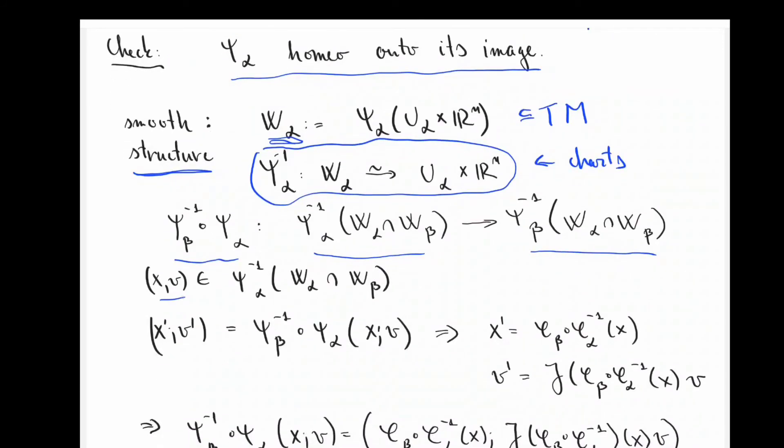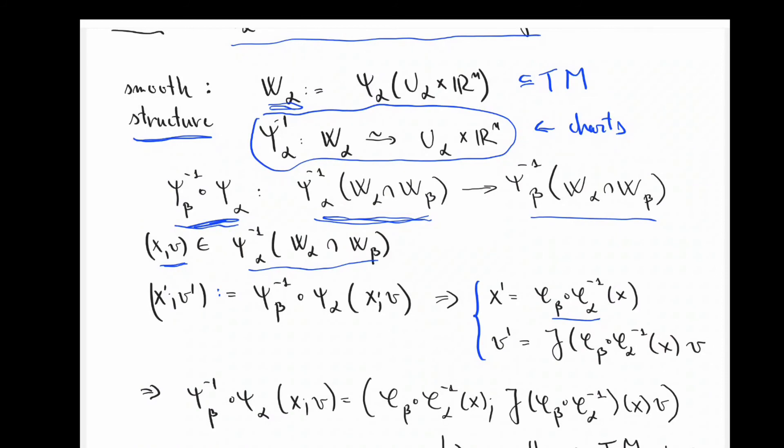So now, if the pair xv sits here in the domain of definition, so in psi alpha inverse of the intersections of w alpha and w beta, then obviously I can take x prime v prime to be the image of xv under this map, the transition map. Well, what does this mean? Well, based on how the equivalence relationship tilde is set up, what this means is that x prime must be phi beta composed phi alpha inverse of x. Moreover, v prime needs to be the Jacobian of v at x of the transition map.